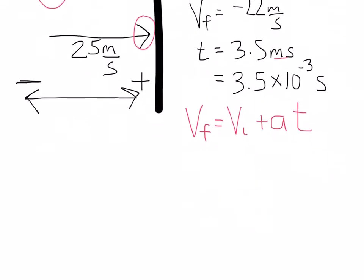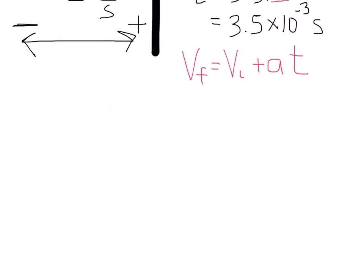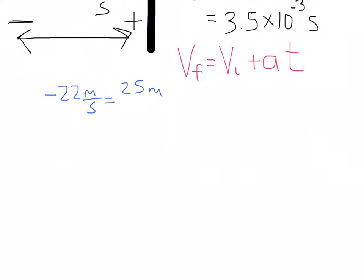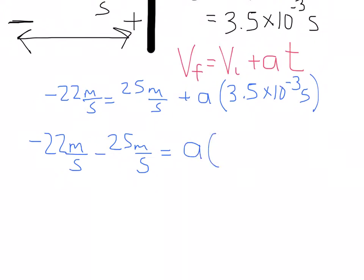Let's begin and substitute. We have the final velocity is minus 22 meters per second. The initial velocity is 25 meters per second plus the A times 3.5 times 10 to the negative 3 seconds. I'm going to subtract here this velocity, so I get minus 22 meters per second minus 25 meters per second is equal to that acceleration times 3.5 times 10 to the negative 3 seconds.